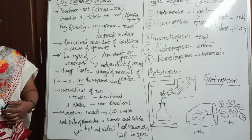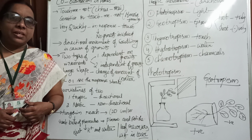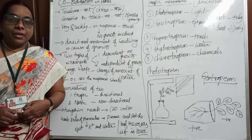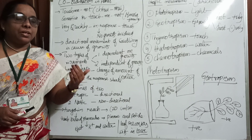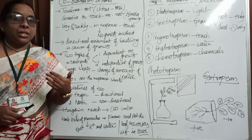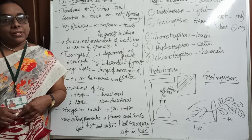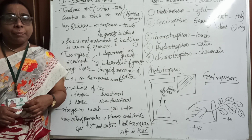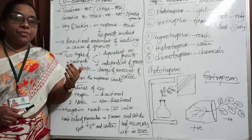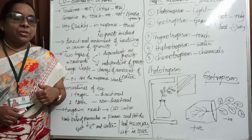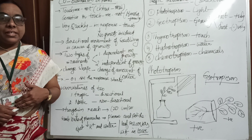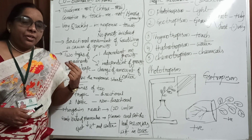In human beings, coordination is carried out in two ways: one with the help of the nervous system and the second with the help of the endocrine system. The nervous system shows responses only for superficial regions, whereas the endocrine system shows responses in the deeper regions. That is why both systems are developed in human beings.